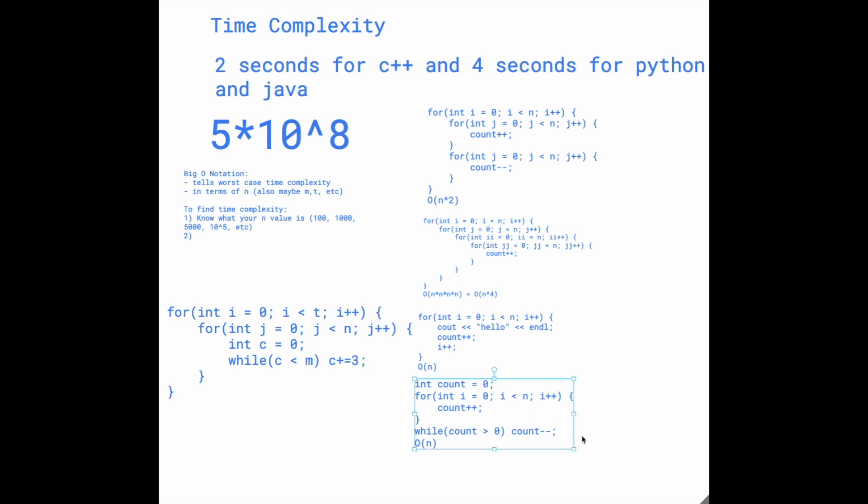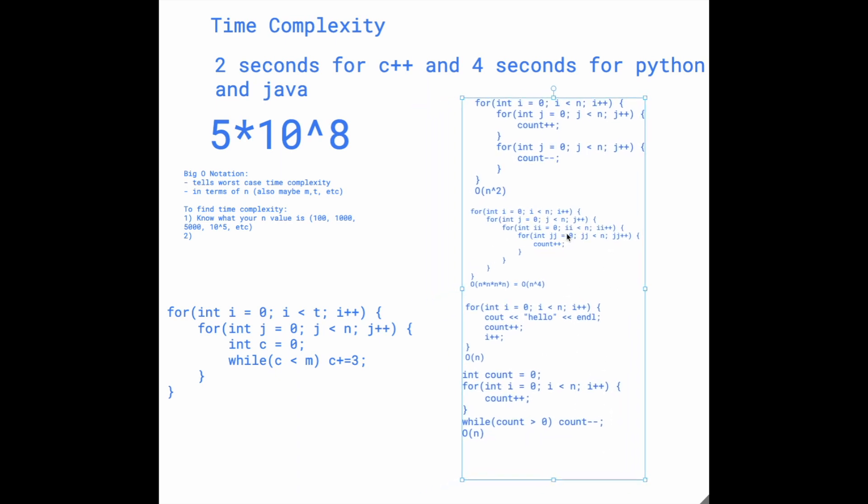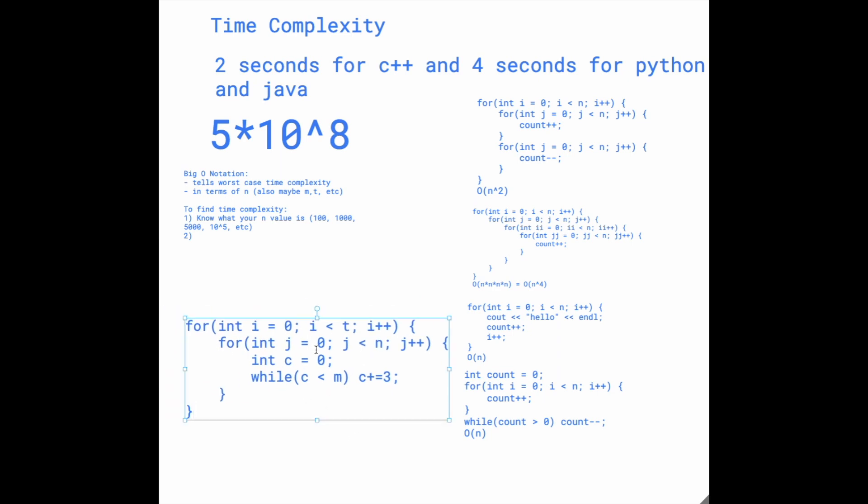I'll give you a moment to look at this example. In this example, what we have is t, a for loop of t, so it's O of t. Then, we have j that runs through n times, so n. And then, we have a while loop that goes from zero to m.